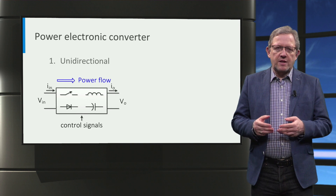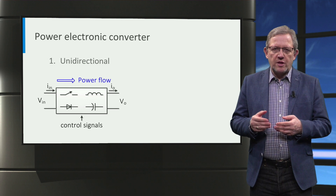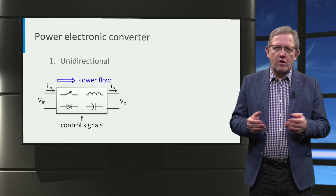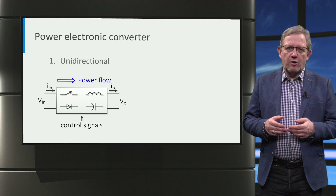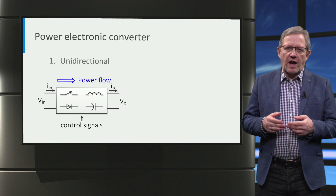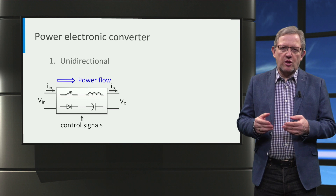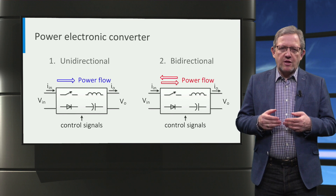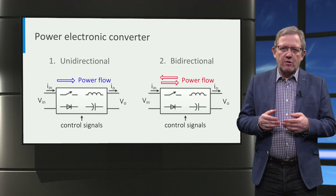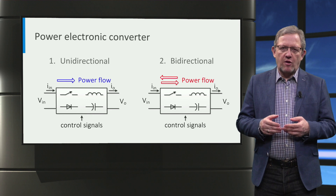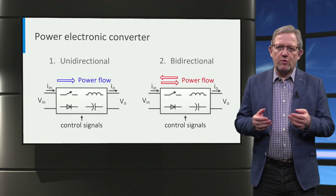The second way to classify converters is based on whether they facilitate unidirectional or bidirectional power flow. Typically, unidirectional converters use diodes at the output in order to allow power flow in one direction only. In case of bidirectional power flow converters, semiconductor switches like MOSFETs or IGBTs are used on both input and output sides.